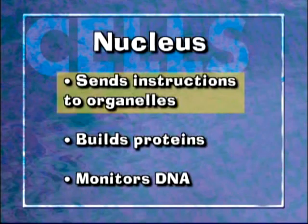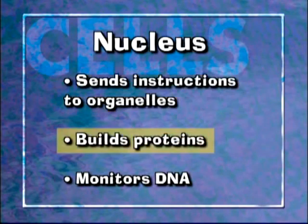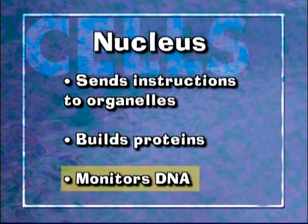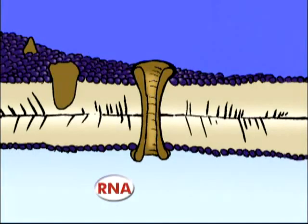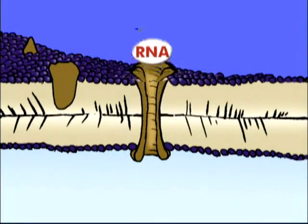DNA is the hereditary information that cells need to function. The nucleus sends those instructions to each organelle, builds proteins, and keeps track of the DNA. The nucleus has its own membrane called the nuclear envelope. It's also semi-permeable, allowing proteins and ribonucleic acid, or RNA, to enter or leave the nucleus. RNA is chemically similar to DNA and provides a copy of the instructions for building proteins needed by the cell.